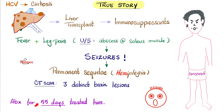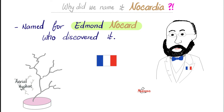Physicians prescribed antibiotics for him. After a 55-day course of antibiotics, he finally started to improve and was successfully discharged from the hospital. The diagnosis is Nocardia. Have you ever wondered why we call it Nocardia? It's named after the French scientist who discovered it, Edmond Nocard.